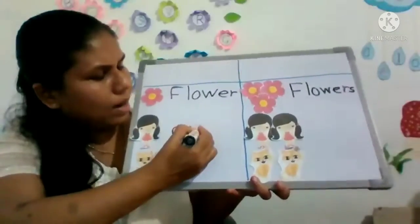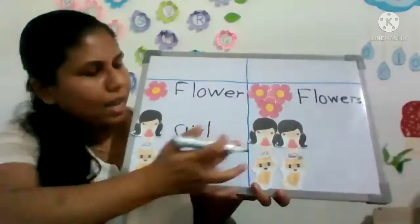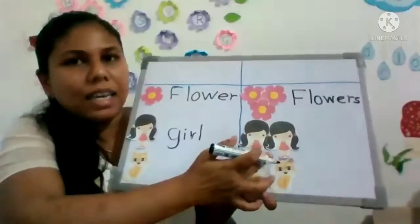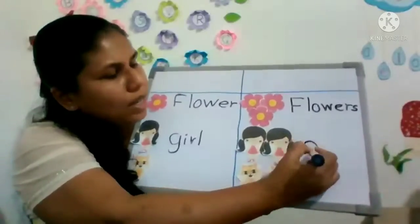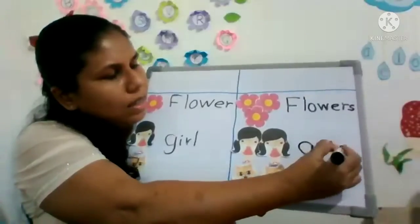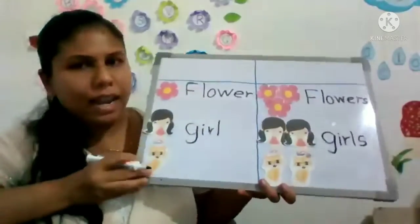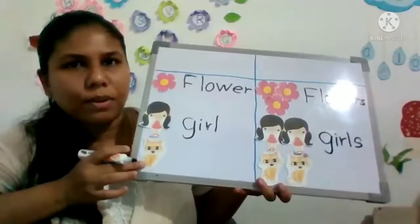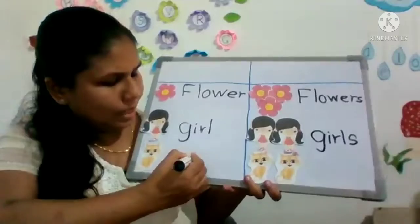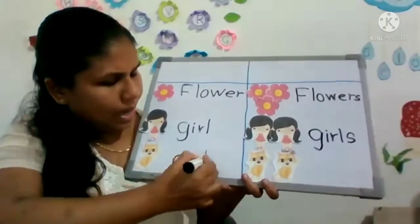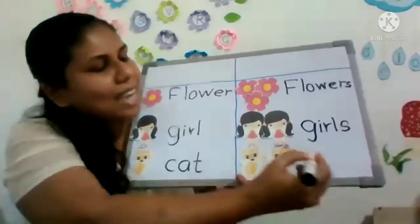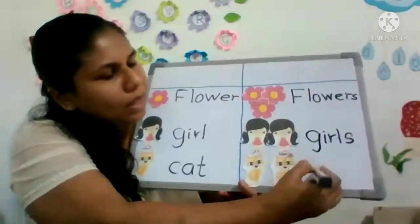Girl, right. Girl, okay. And here — girls, here girls, right. Girls. And here, who is this? Cat. Yes, very good. Who is this? Cat. And here — cats. Yes, cats, okay.